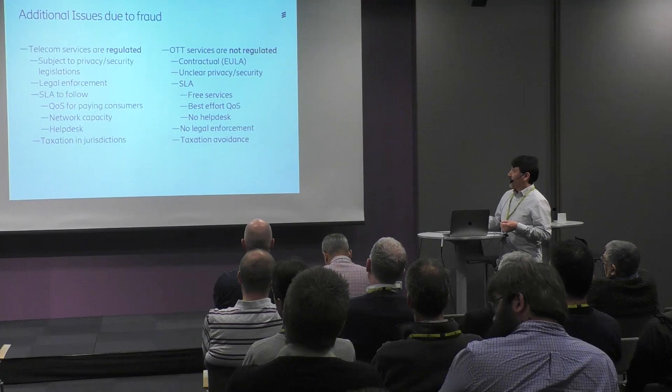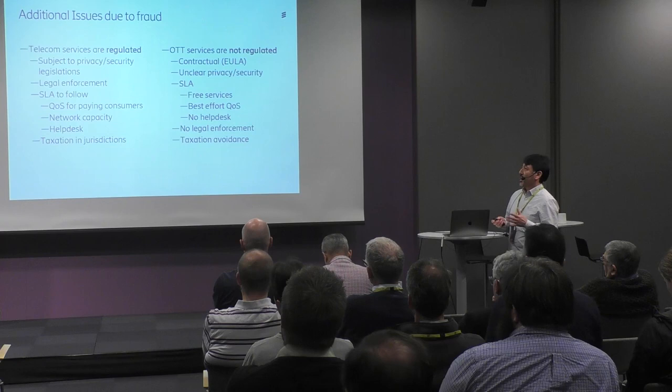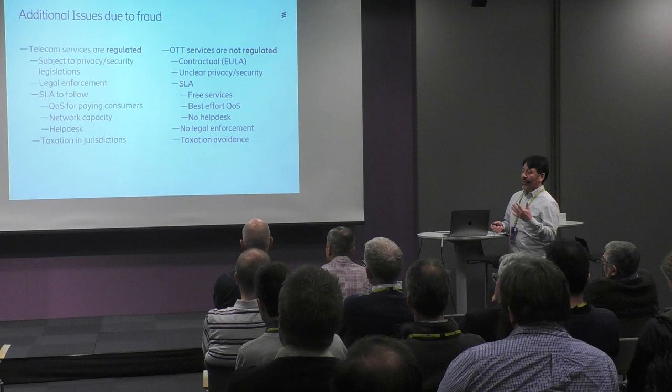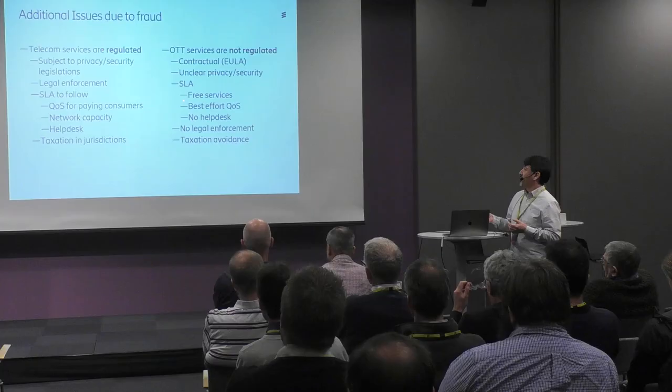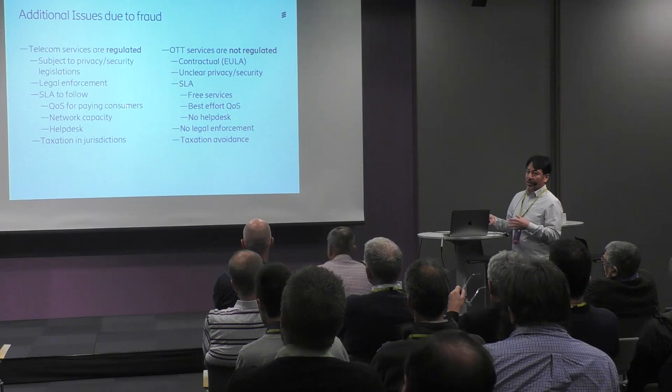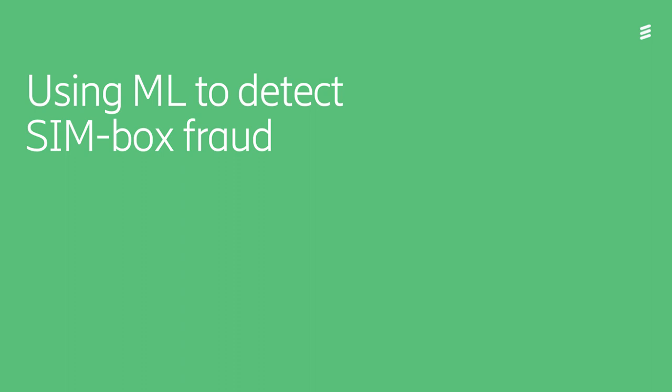What is happening is that this interconnect carrier is playing two roles. On one side, it has a commitment to regulation, legal enforcement, service level agreements, security, and privacy. But on the other side, it is violating agreements — doing best-effort routing with no privacy and no security. One result of this call deviation is that voice quality is affected on the B side, and users complain — not to the OTT operator, but to the originating operator. So the collaboration with an operator was about: how can we detect this SIMbox case?